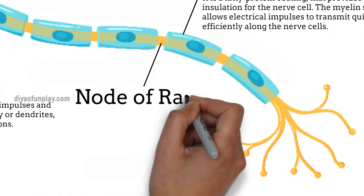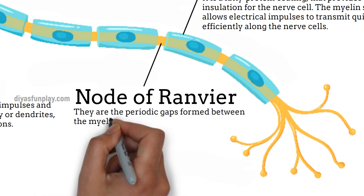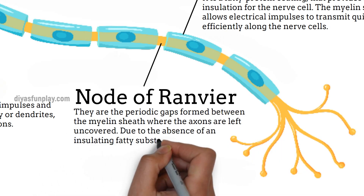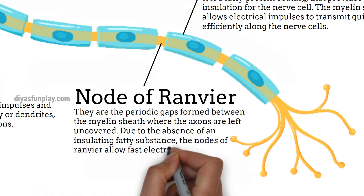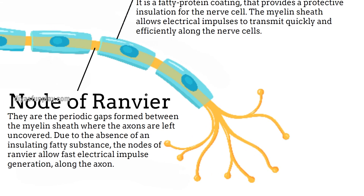Node of Ranvier. The nodes of Ranvier are the periodic gaps formed between the myelin sheath where the axons are left uncovered. Due to the absence of an insulating fatty substance, they allow fast electrical impulse generation along the axon.